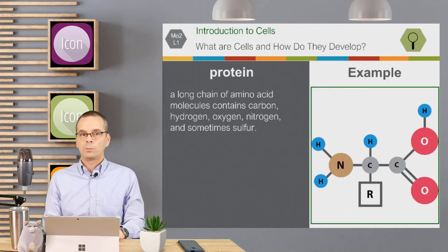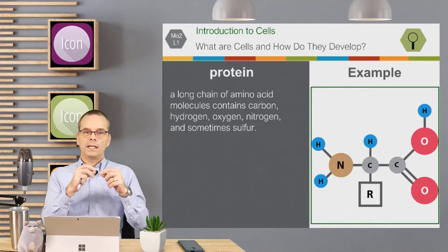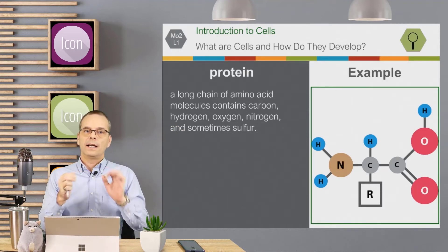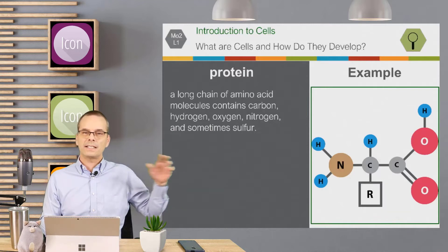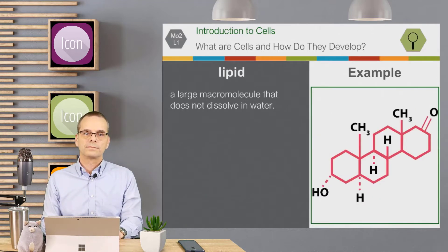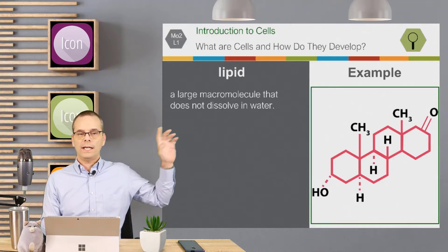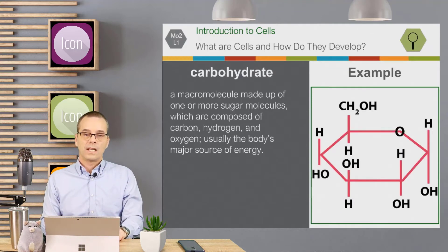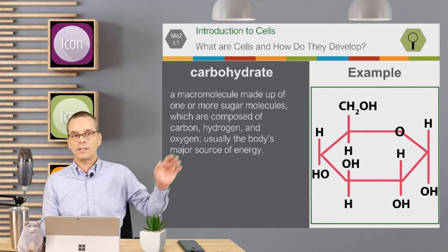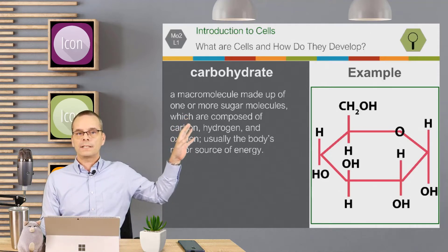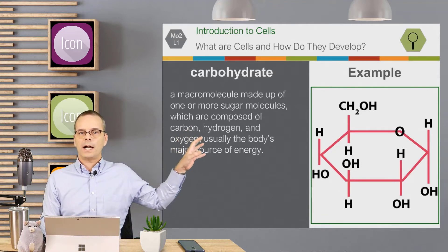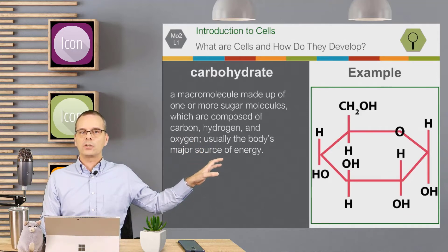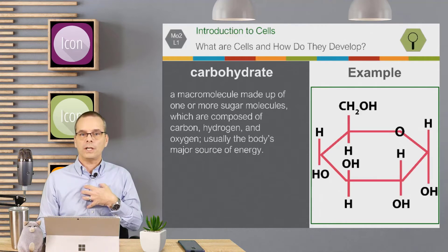You also have protein. Protein is a long chain of amino acid molecules that contain carbon, hydrogen, oxygen, nitrogen, and sometimes sulfur. You then have a lipid. A lipid is a large macromolecule and it does not dissolve in water. You also have carbohydrate. A carbohydrate is also a macromolecule made up of one or more sugar molecules composed of carbon, hydrogen, and oxygen. Carbohydrates are usually our main source of energy — they're what we burn for energy.